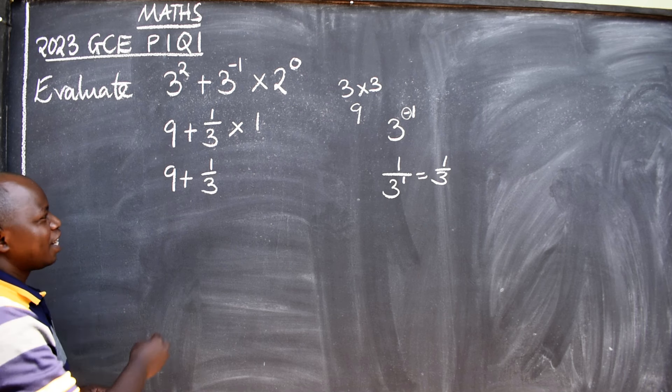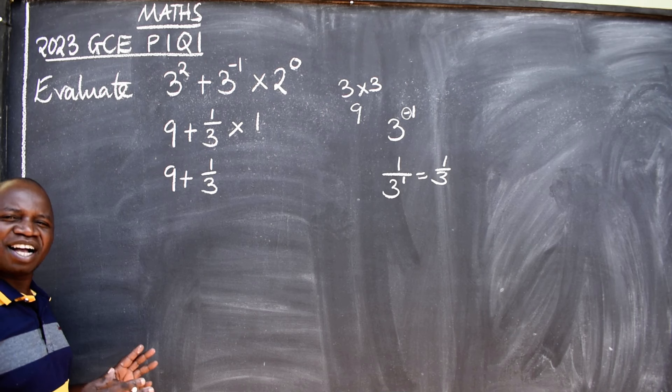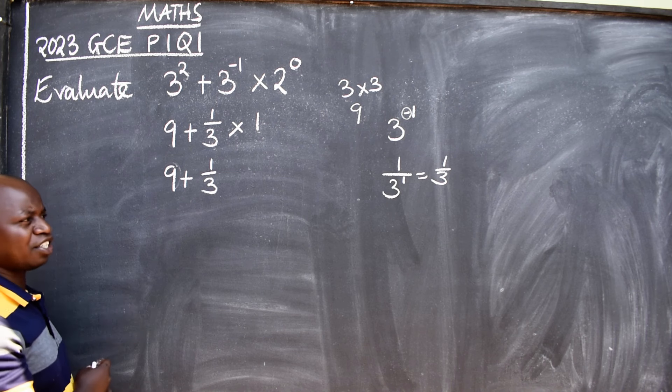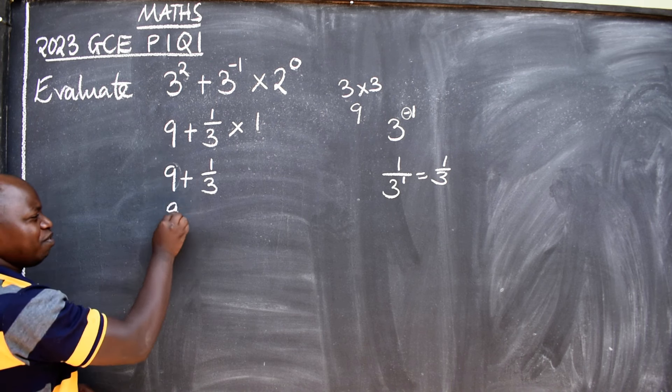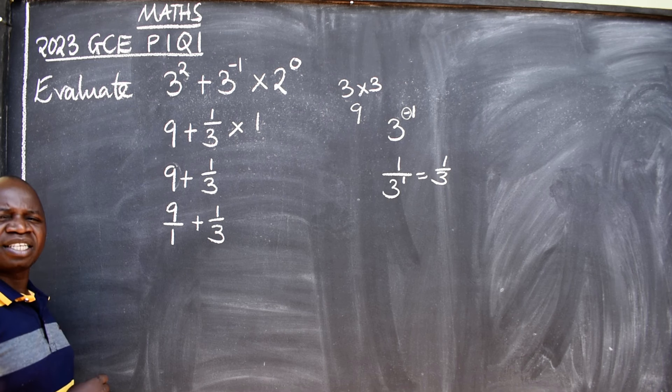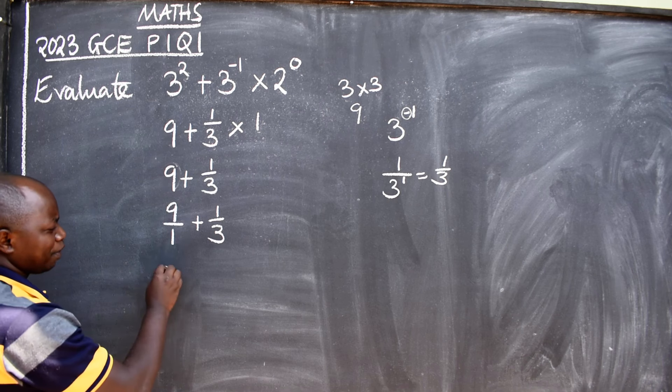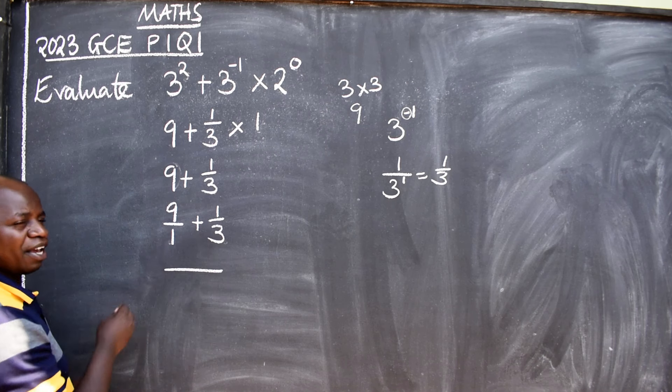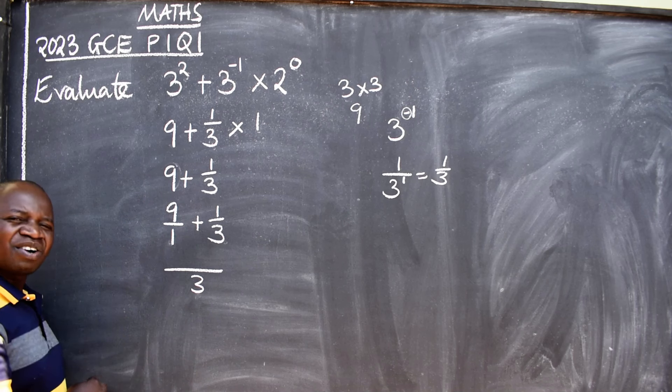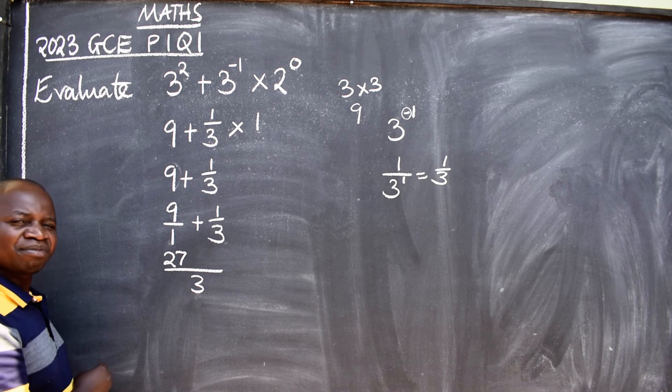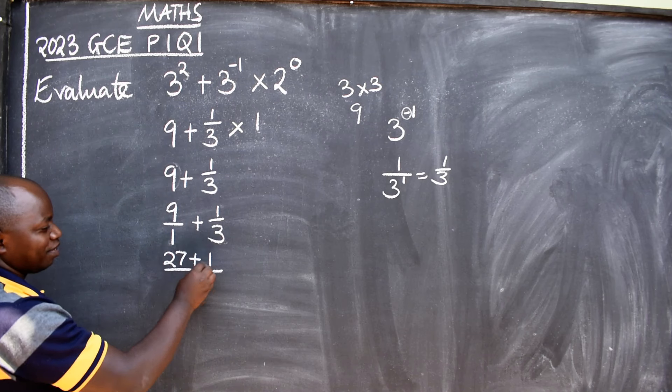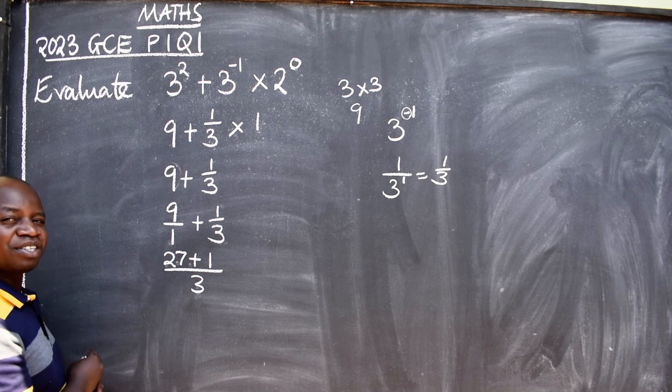Now at this point I'm going to add without the calculator. I have a fraction here, so this is a whole number. You have to make it a fraction as well. So 9 as a fraction will give you 9 over 1, then plus 1 over 3. What next? How do we add fractions? Common denominator. What is common here? 3. How many ones are in 3? 3. 3 times 9, what are we going to get? 27 plus, how many 3s are in 3? 1 times 1, 1. What is 27 plus 1? 28.